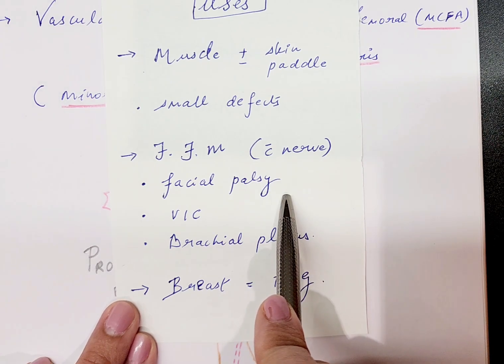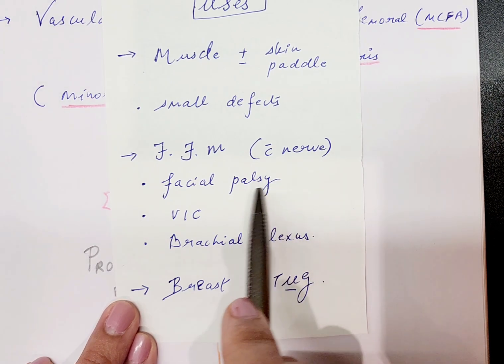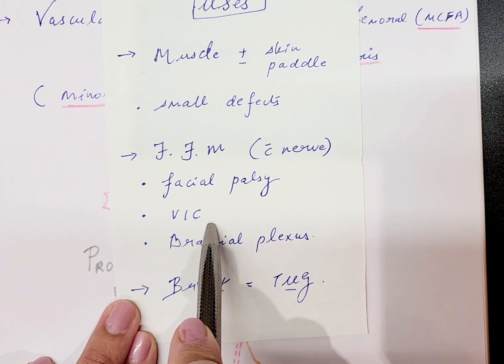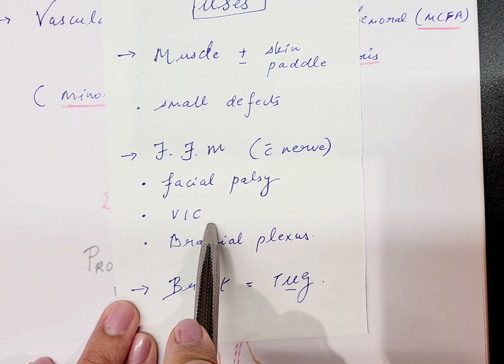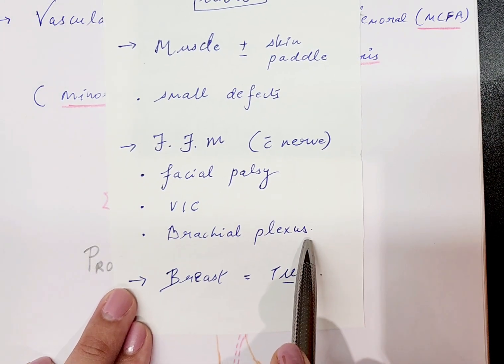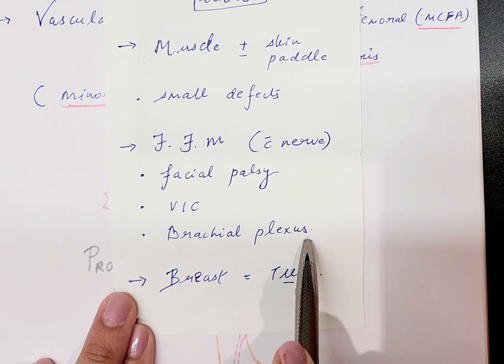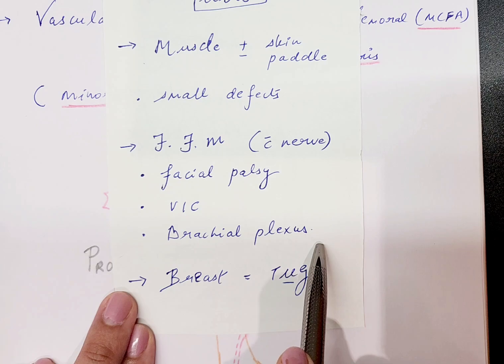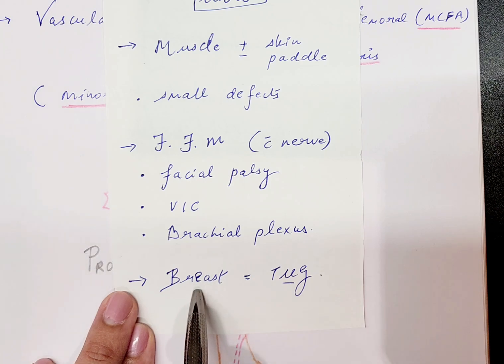It has been widely used in cases of facial palsy for reinnervation, VIC, that is Volkmann's ischemic contracture, when we need to restore the action of the long flexors of the hand, or in case of brachial plexus injury, especially traumatic brachial plexus, where we need to restore functions such as elbow flexion, finger flexion, or both.